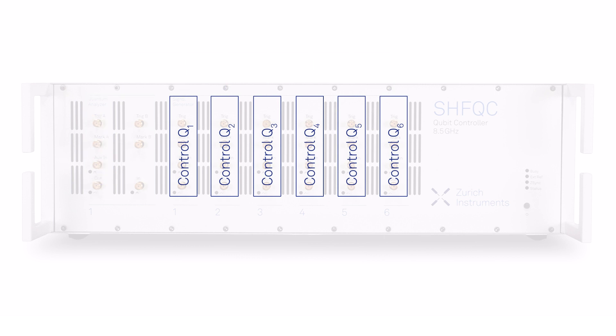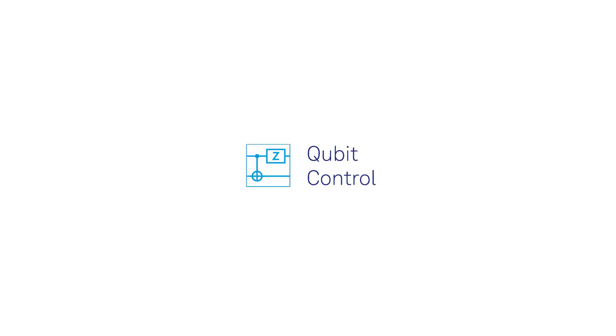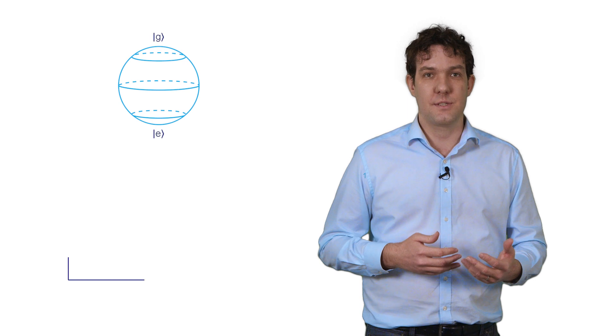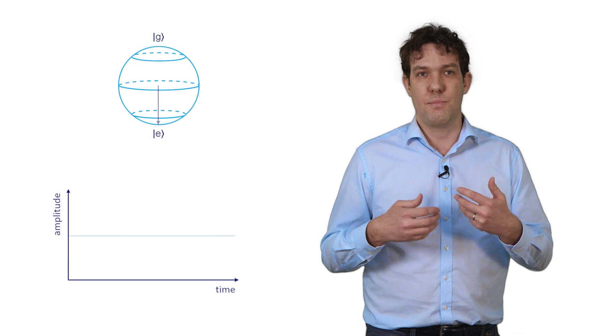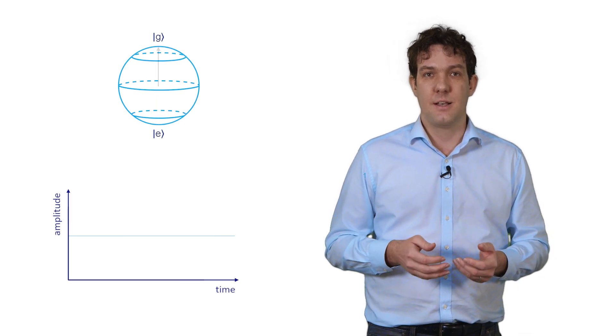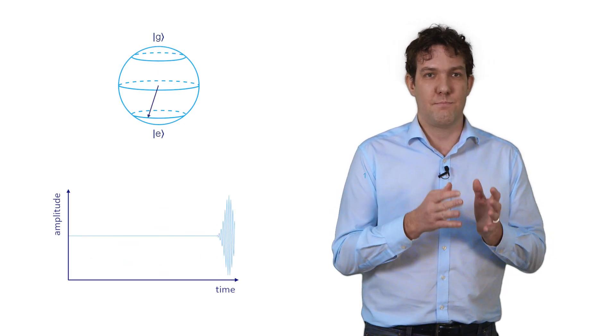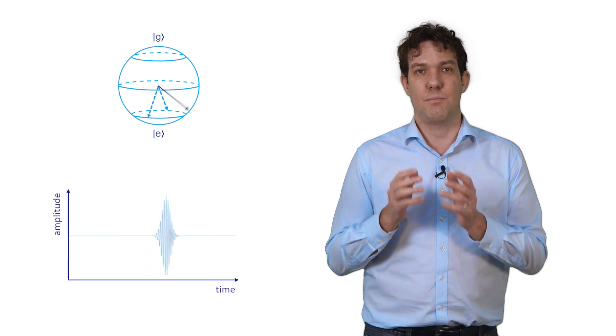But now let's have a closer look at the control channels. Superconducting qubits are controlled by applying microwave pulses to the physical qubits. The gate quality depends on many parameters of the pulse such as the precise amplitude, phase, frequency, shape and the timing.